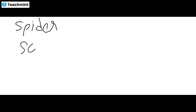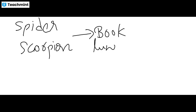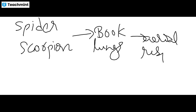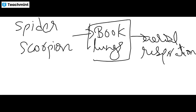Next, coming to spiders and scorpions, the respiratory organs are book lungs. Book lungs are useful for aerial respiration. Aerial respiration is seen in spiders and scorpions — they respire through book lungs.